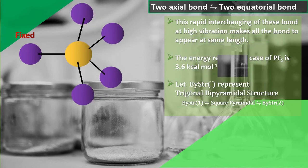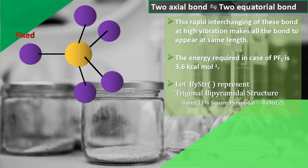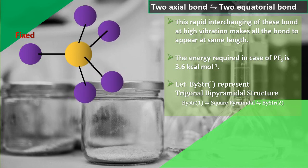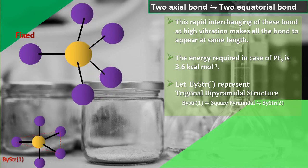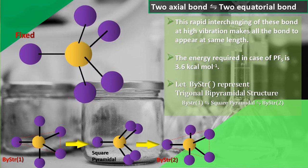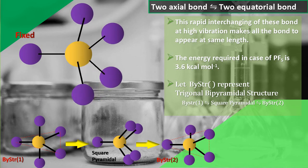Thus this interchanging of bonds at high vibration makes the bond lengths appear to be the same. In case of PF5, it requires 3.6 kcal per mole of energy to continuously change its structure from one trigonal bipyramidal to another, with an intermediate square base pyramidal structure.